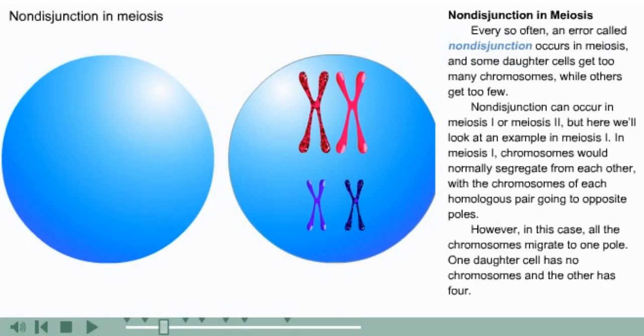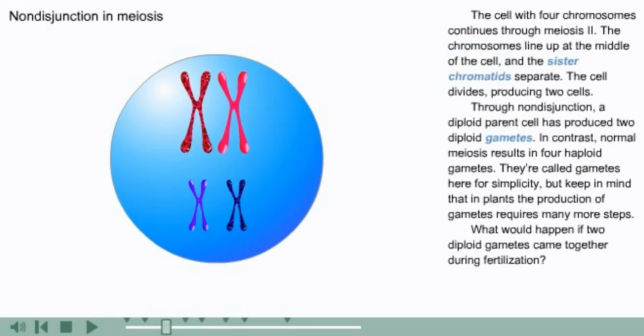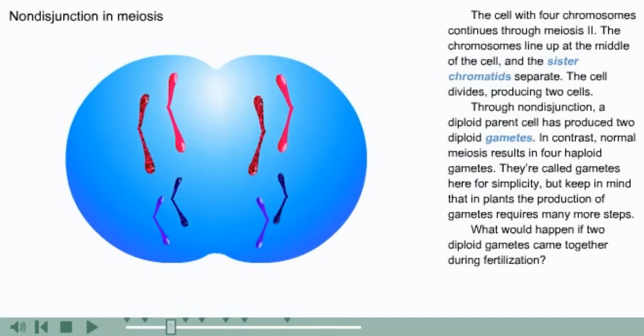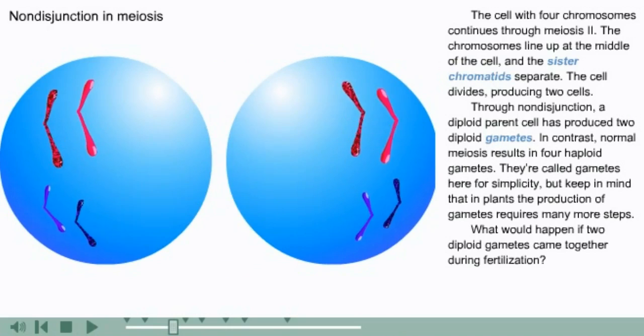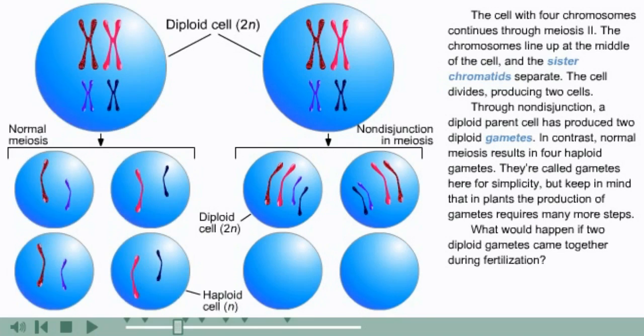One daughter cell has no chromosomes and the other has four. The cell with four chromosomes continues through meiosis two. The chromosomes line up at the middle of the cell and the sister chromatids separate. The cell divides, producing two cells. Through non-disjunction, a diploid parent cell has produced two diploid gametes.